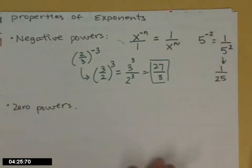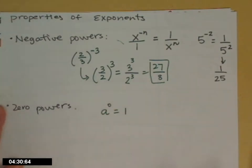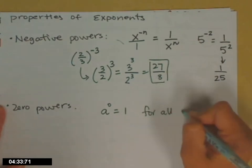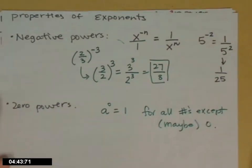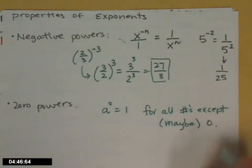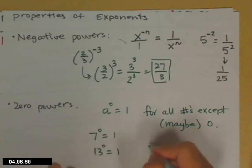Last property is the 0 power, and it looks like this. A to the 0 equals 1 for all numbers except, and I'll put this in parentheses, maybe 0. And I'm going to tell you that you're not going to have to worry about this exception until you get to Calc 2, so let's not worry about it for now. So if you have 7 to the 0, it's 1. If you have 13 to the 0, it's 1. If you have ABC to the 0, that's 1.